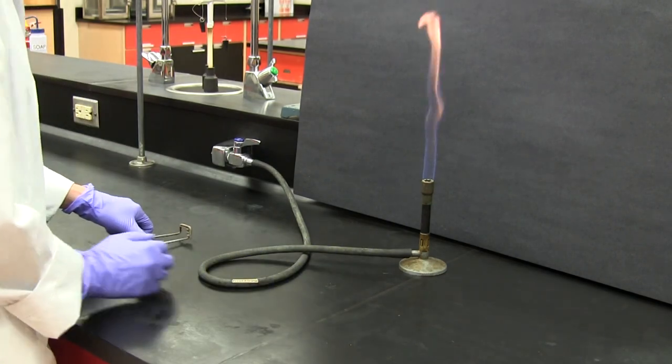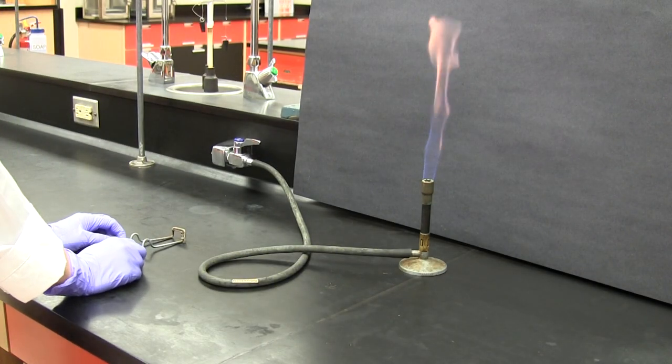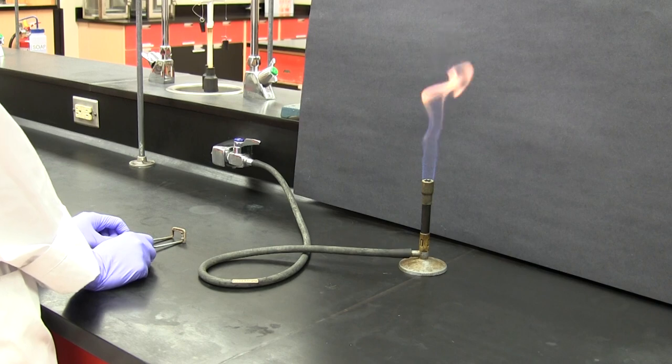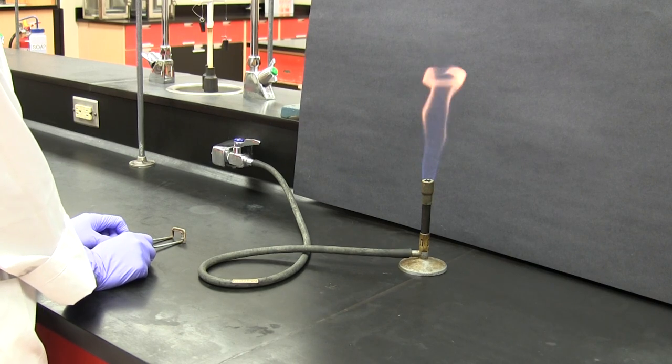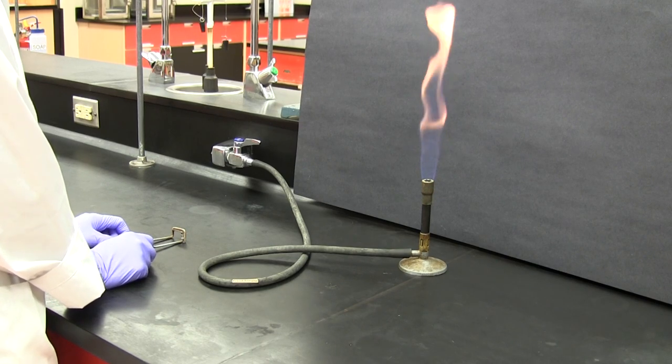Notice that when the gas is first ignited, the flame produced has a yellow color. This indicates that the gas isn't burning efficiently and it's producing a lot of carbon.